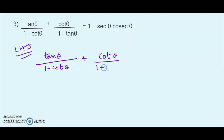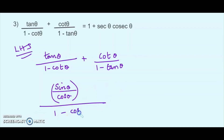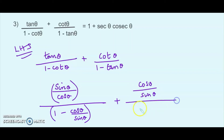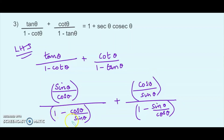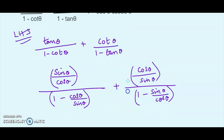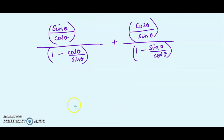Substituting: tan θ = sin θ / cos θ and cot θ = cos θ / sin θ. So the expression becomes (sin θ / cos θ) / (1 − cos θ / sin θ) for the first part, and (cos θ / sin θ) / (1 − sin θ / cos θ) for the second part. Before touching the numerators, we need to work on the denominators by taking the LCM.